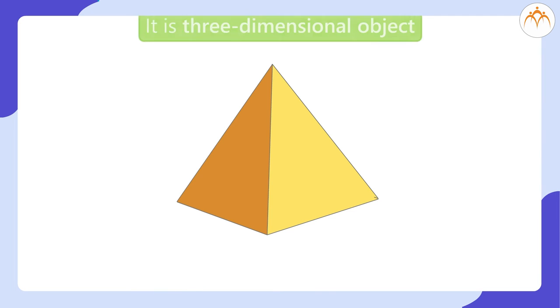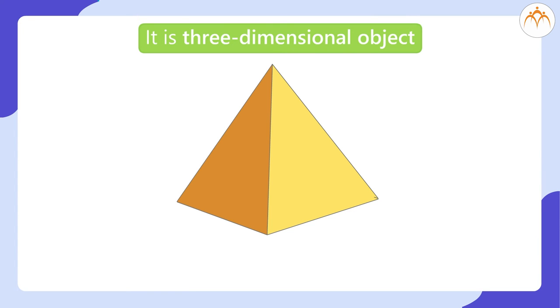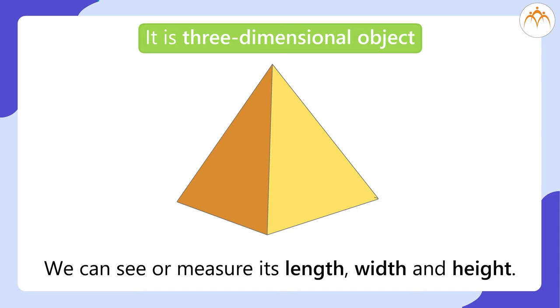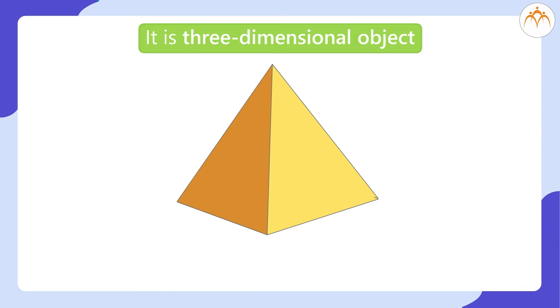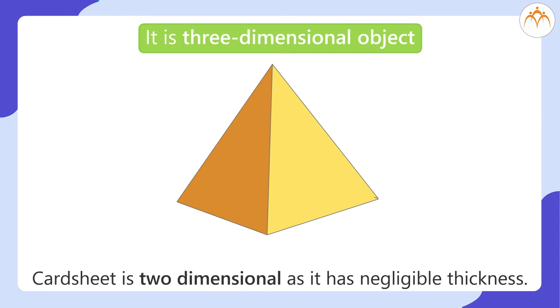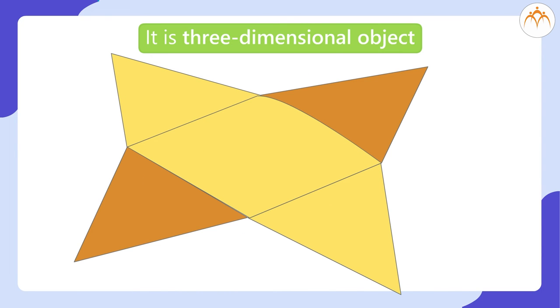Look at this pyramid. It is a three-dimensional object as we can see or measure its length, width and height. It is made up of card sheet. Card sheet is two-dimensional as it has negligible thickness. If we cut few edges of it, the shape of card sheet it is made up of can be obtained. This is the shape which we obtain.